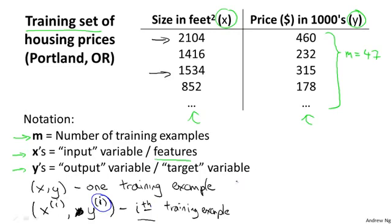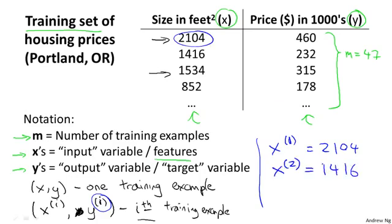So for example, x^1 refers to the input value from the first training example. So that's 2104, right? Because that's x in the first row. x^2 will be equal to 1416, right? That's the second x. And y^1 will be equal to 460, because that's the y value for my first training example. That's what that 1 refers to.